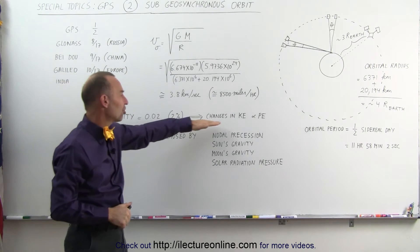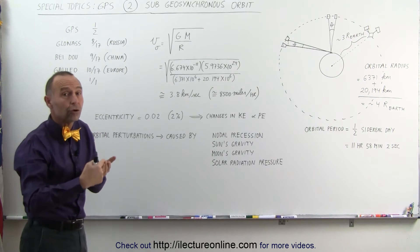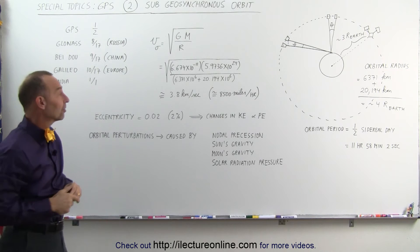It does cause the satellite to have changes in the kinetic and potential energy, which means when it's closer to the Earth, it travels faster. When it's farther away from the Earth, it travels a little bit slower, so the speed is not a constant speed.